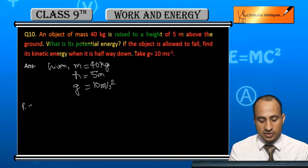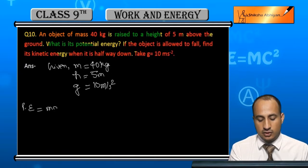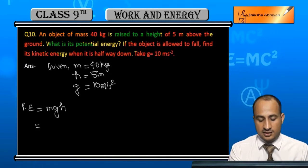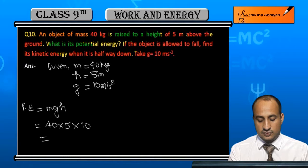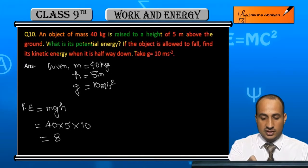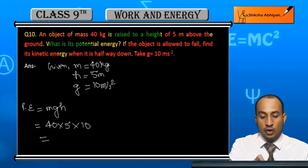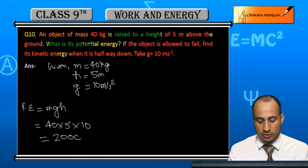So here is potential energy. Students, we know potential energy is equal to mgh, which is 40 into 5 into 10 joule. This is 40 into 5 which is 200 and then into 10.